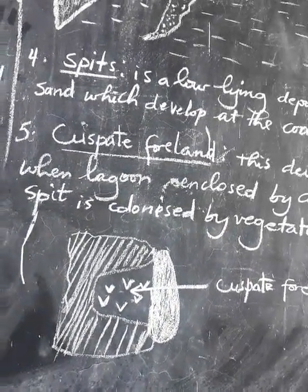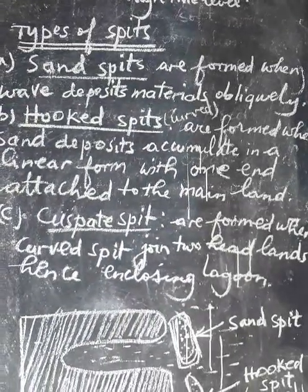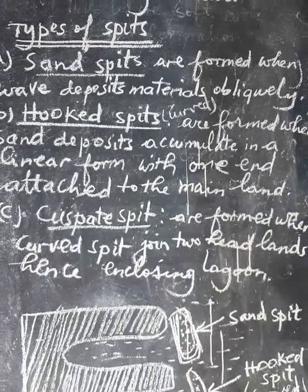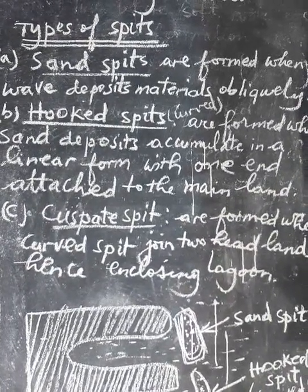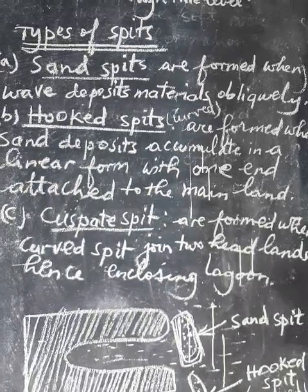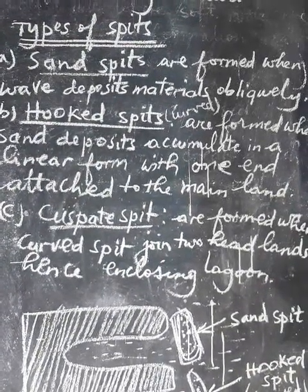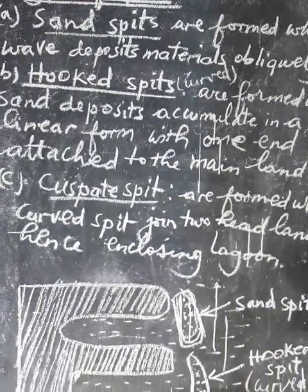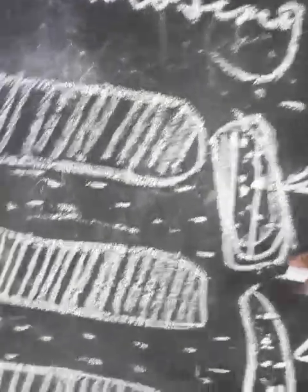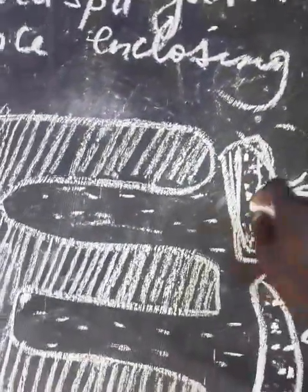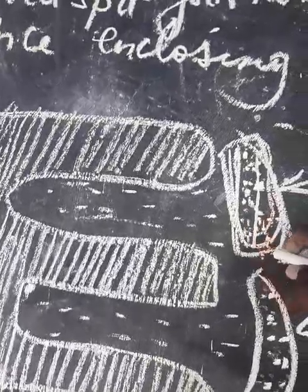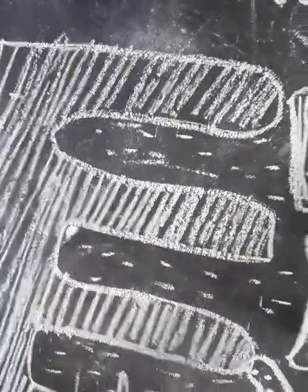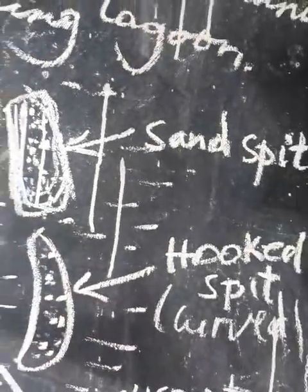There are three main types of spits. Number one is a sand spit. Sand spits are formed when a wave deposits material obliquely. When sand is deposited obliquely along the coast, this leads to the formation of a sand spit.